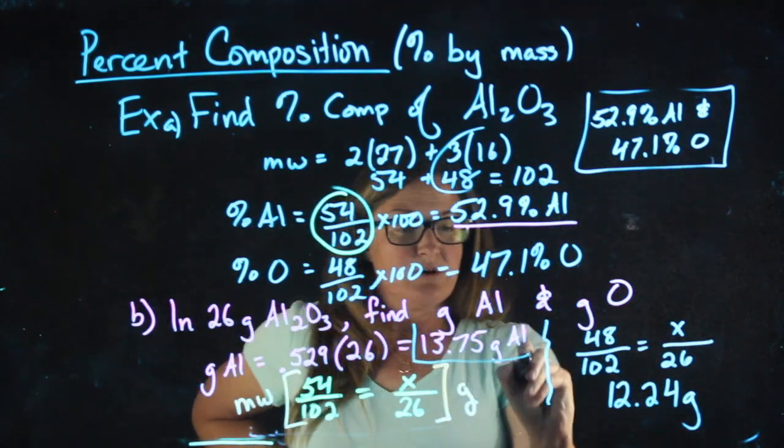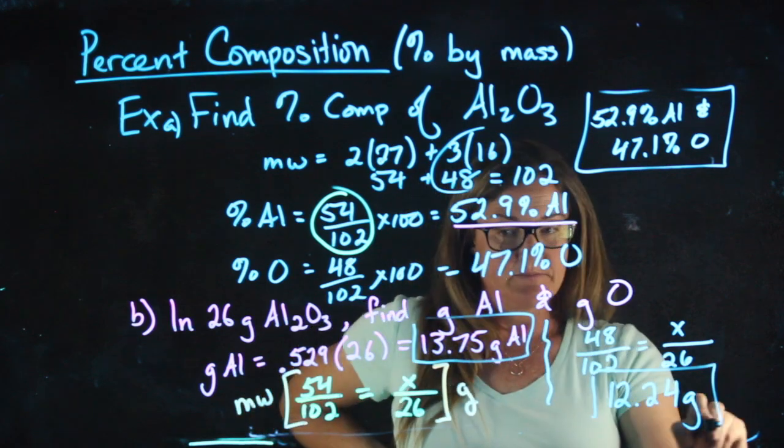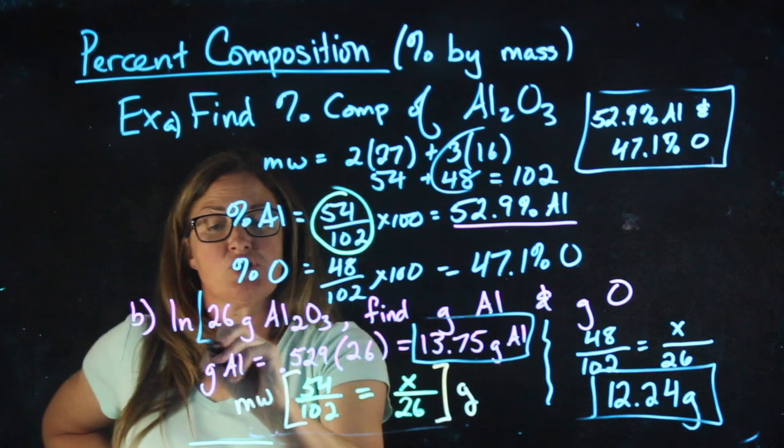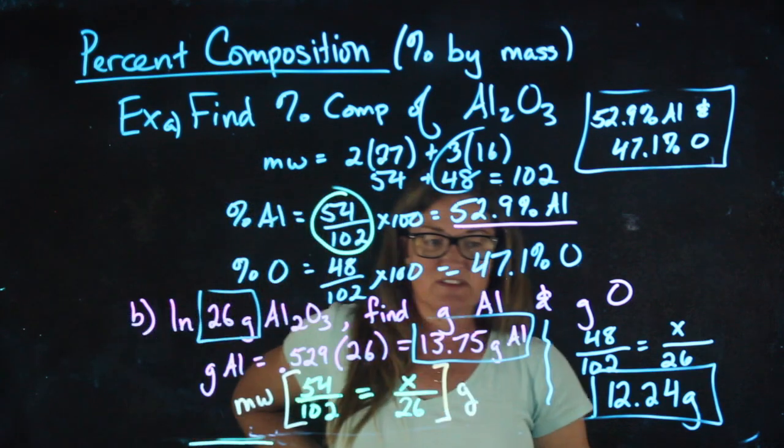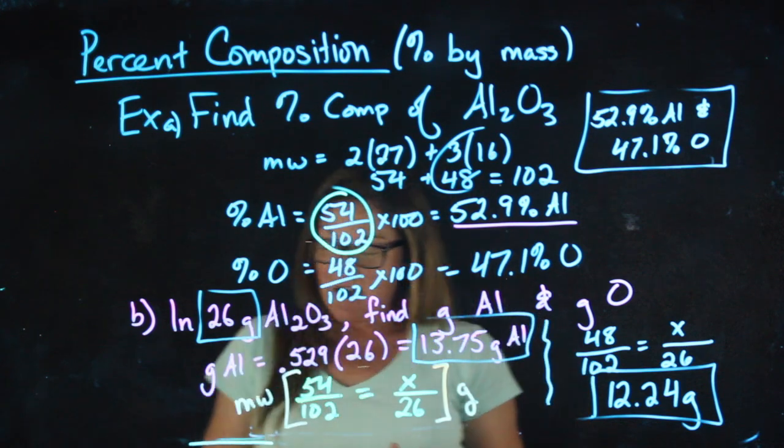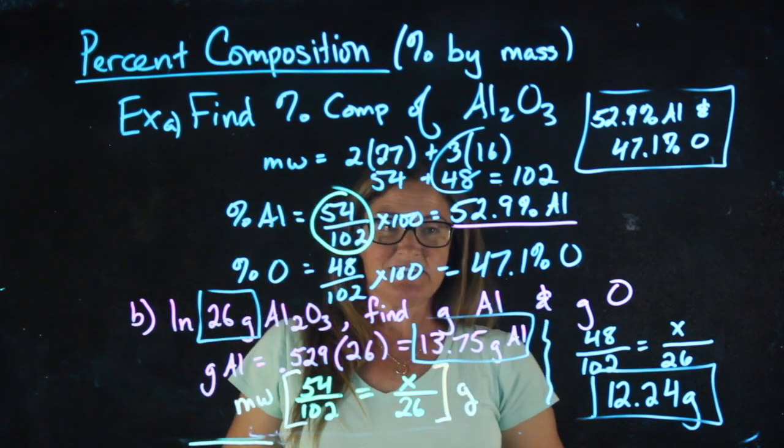What needs to be true about these two grams? The mass of the aluminum plus the mass of the oxygen should equal the total grams, which it pretty much does. I did a little bit of rounding along the way. So you're going to take a look at a practice problem now where you're going to try something similar.